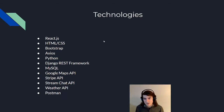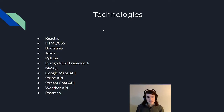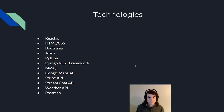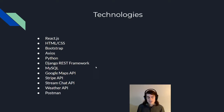I used a bunch of technologies to do that. I used React, HTML, CSS, and Bootstrap for the frontend. I used Axios to make API calls. I used Python and Django REST Framework for the backend. I used MySQL for the database. And I used Google Maps, Stripe, Streamchat, and Weather APIs. And I tested all those with Postman.